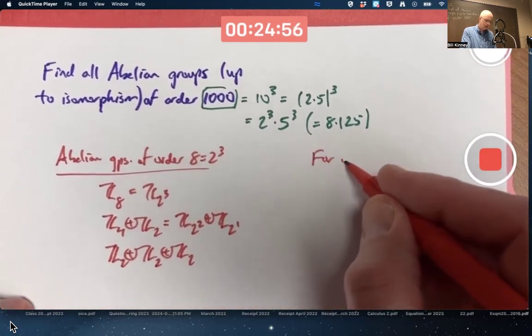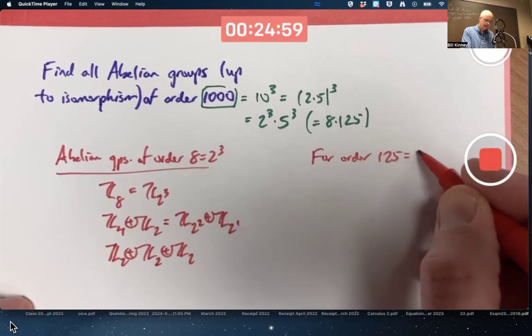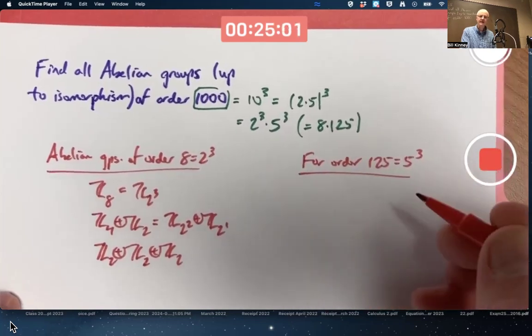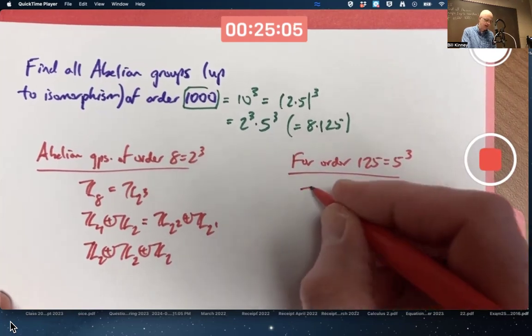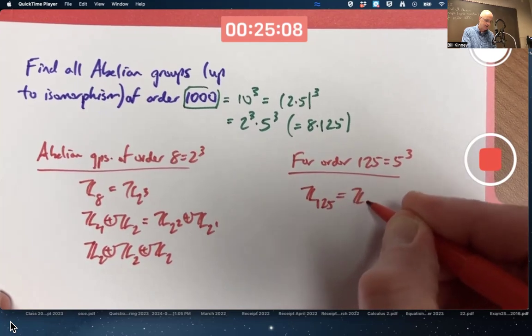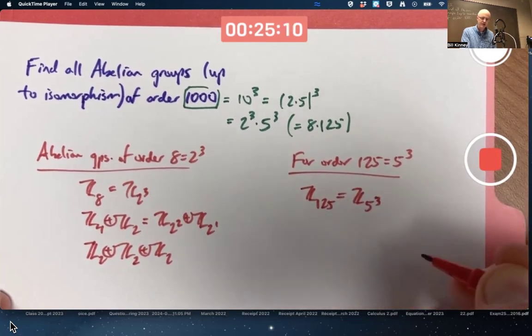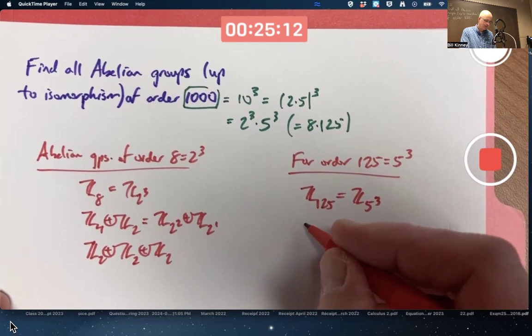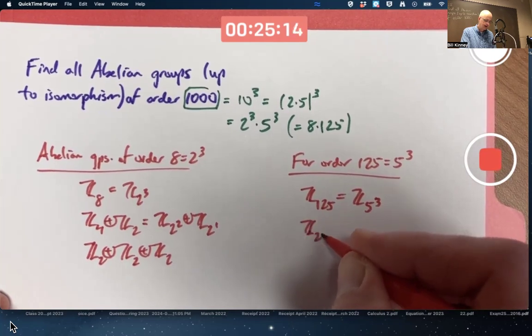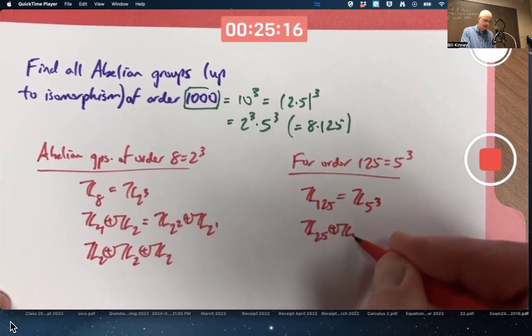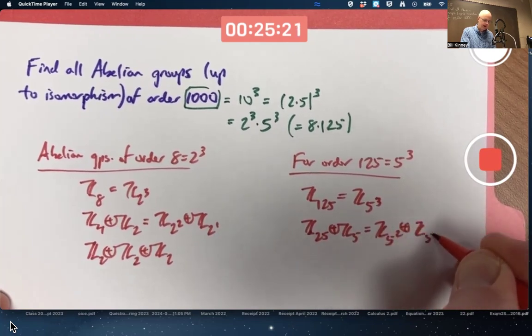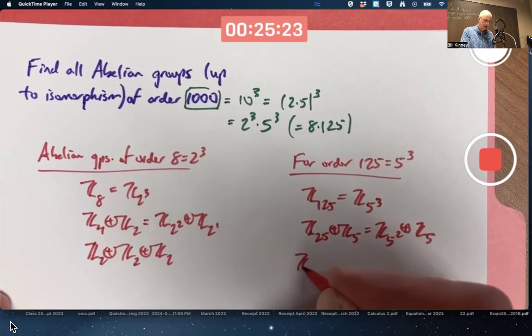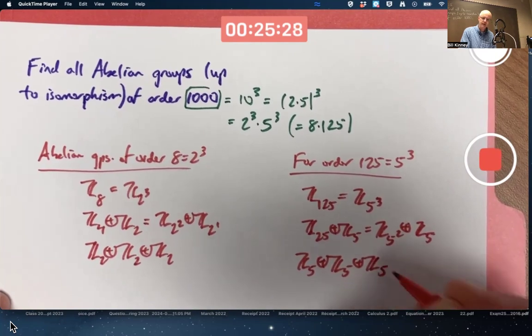For order 125 equals 5 cubed, it's a very similar kind of thing, except the prime changes from 2 to 5. So we've got Z125, that's your cyclic option. The external direct product of Z25 with Z5. Z sub 5 squared external direct product with Z5, and finally one with all Z5s in it, which are all subscripts of 5 to the first power.